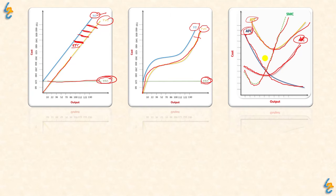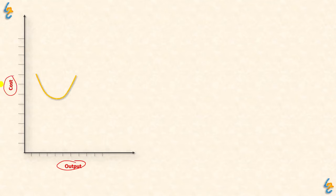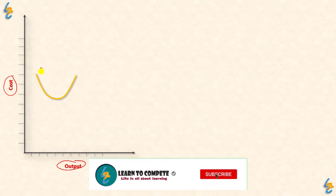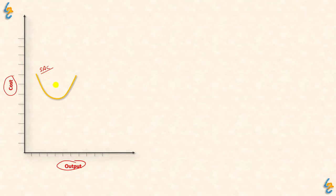Now let's talk about the long run. The x-axis is output and the y-axis is cost. If we talk about the short run, this is our short run average cost curve. Our producer is producing at point OA — a certain amount of output at a corresponding short run average cost.